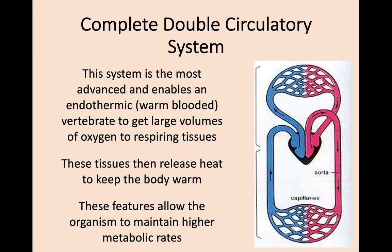This complete double circulatory system is the most advanced circulatory system we know of. It enables a warm-blooded or endothermic vertebrate to get huge volumes of oxygen to those respiring tissues. This is how we maintain high metabolic rates — through effective, high-volume delivery of oxygen — and these tissues release heat to keep our body warm and maintain body temperature.